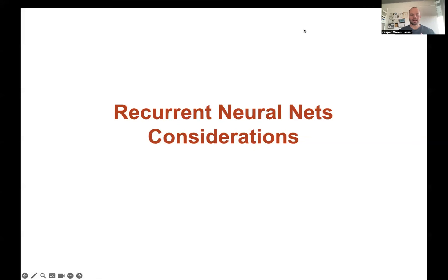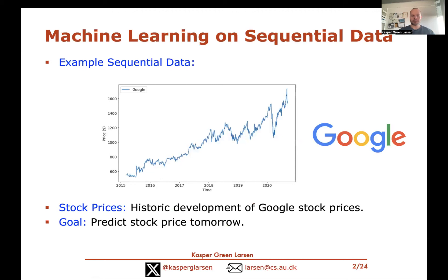Hi, and welcome to this last video on recurrent neural nets. This video assumes that you already watched the preceding two videos, and also the videos on standard neural networks. These recurrent neural nets were introduced in order to do machine learning on sequential data, for instance data like stock prices that develop over time.